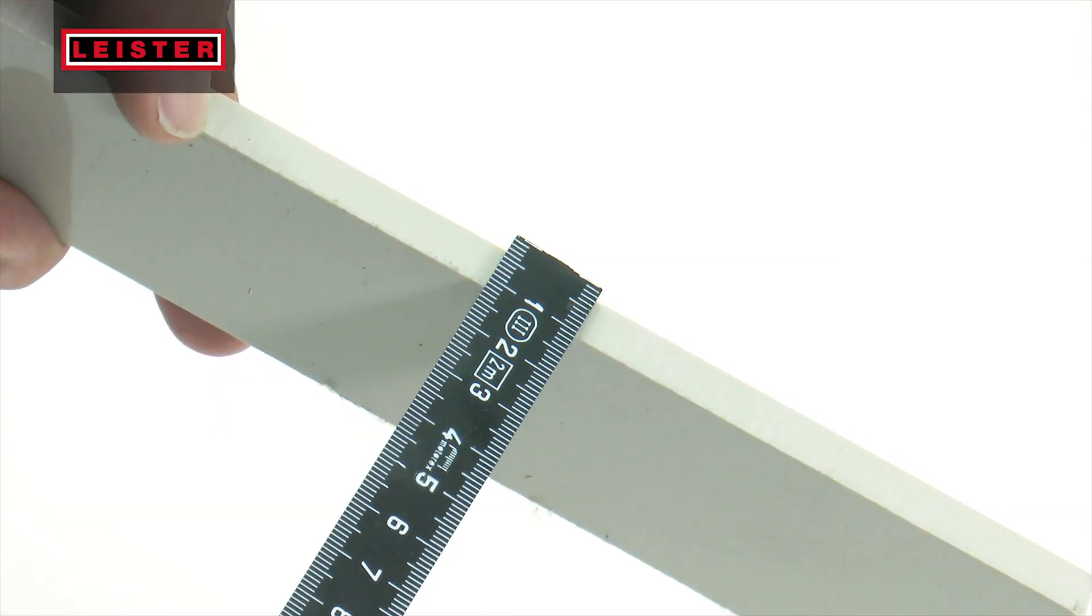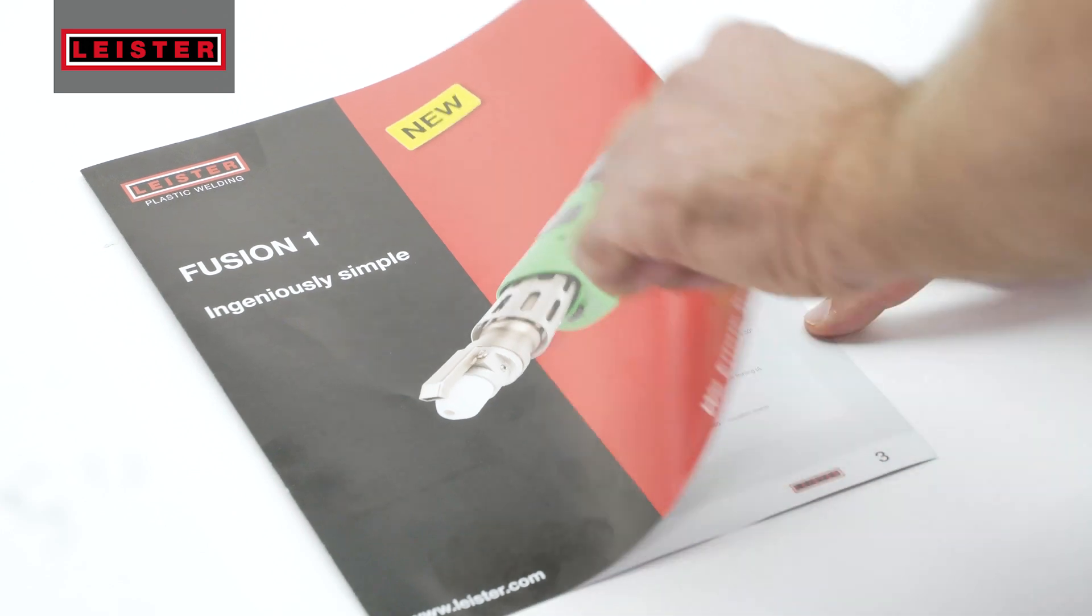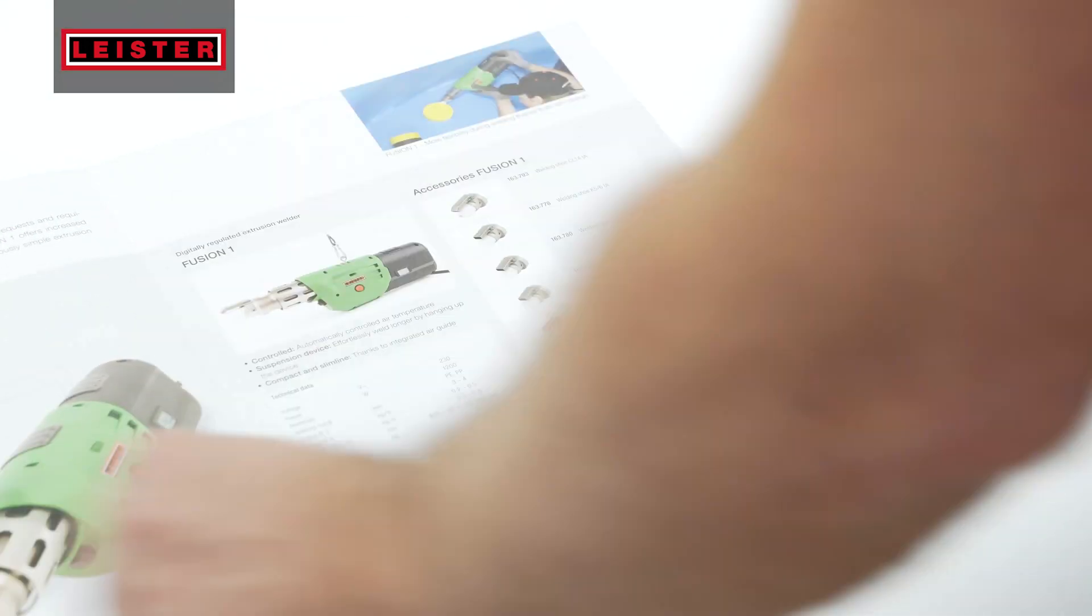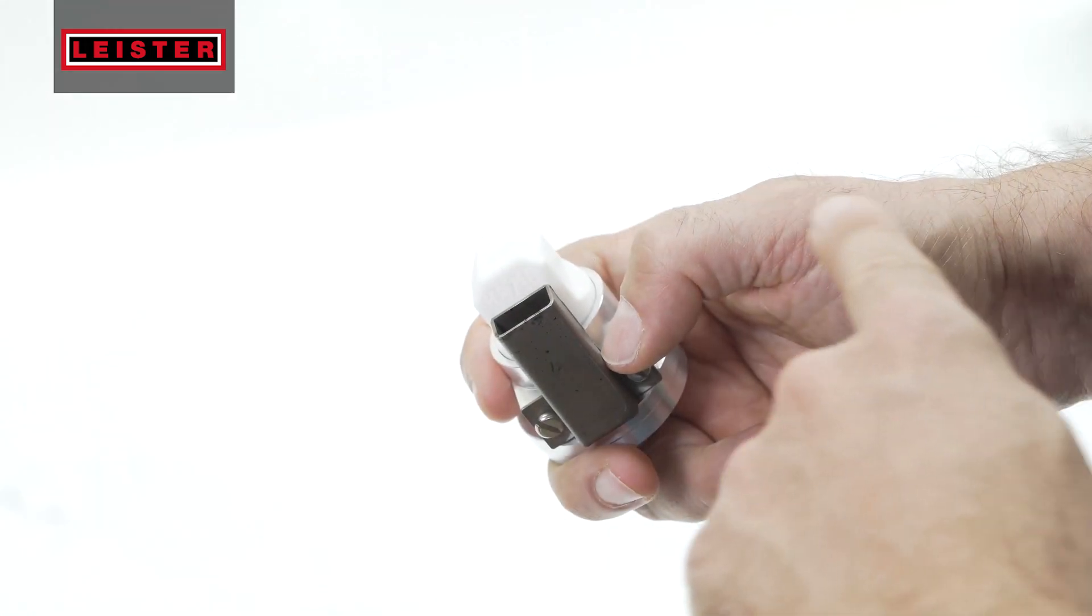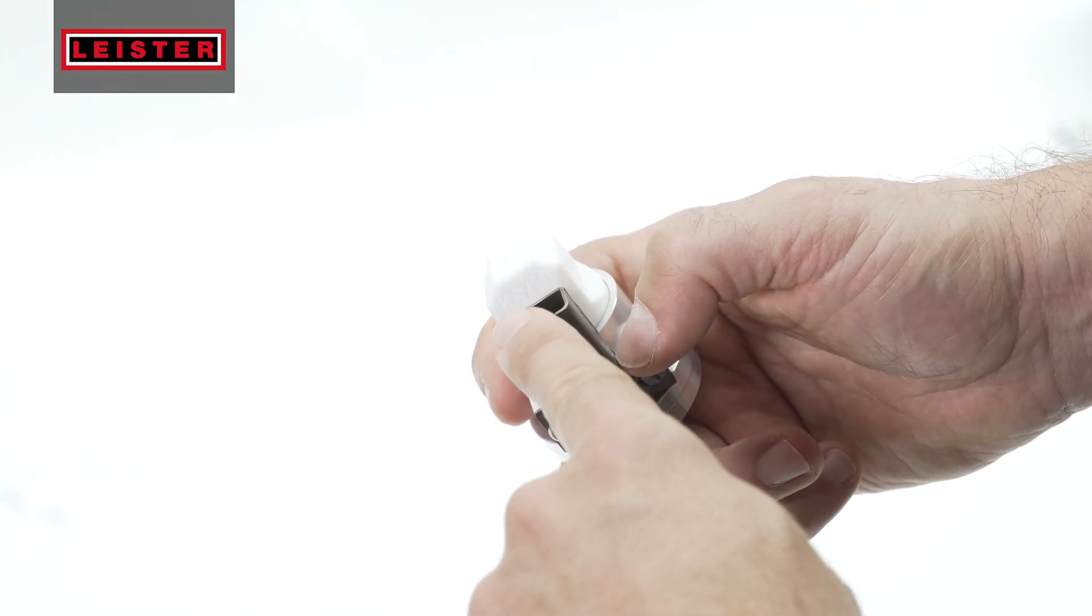Based on the thickness of the material to be welded and the required weld geometry, select the correct welding shoe. The shoe is stamped indicating the geometry of the weld and the base material thickness.